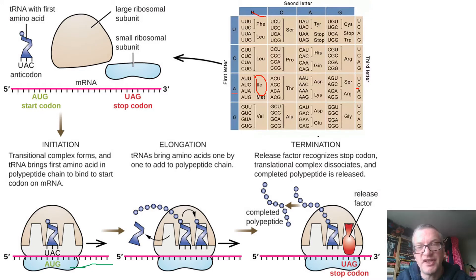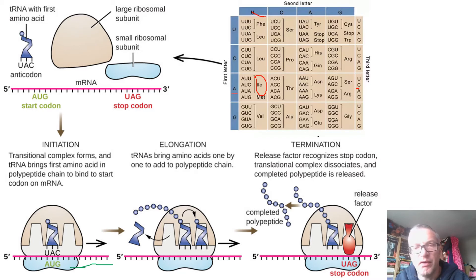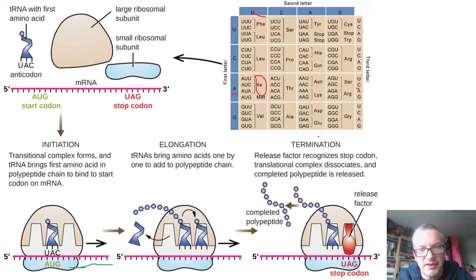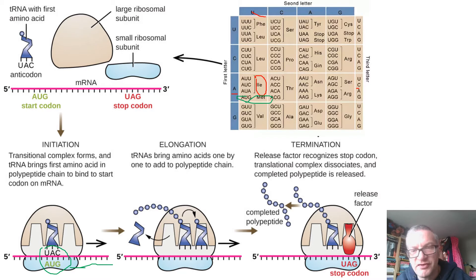Within the bacterial 30S ribosomal subunit, there is a 16S ribosomal RNA that contains the Shine-Dalgarno sequence. This is a purine-rich sequence that matches a sequence found in the five-prime untranslated region of the messenger RNA. These two elements help anchor the ribosome in the correct place, because one property of the codon dictionary is that the first amino acid is always a methionine encoded by AUG.